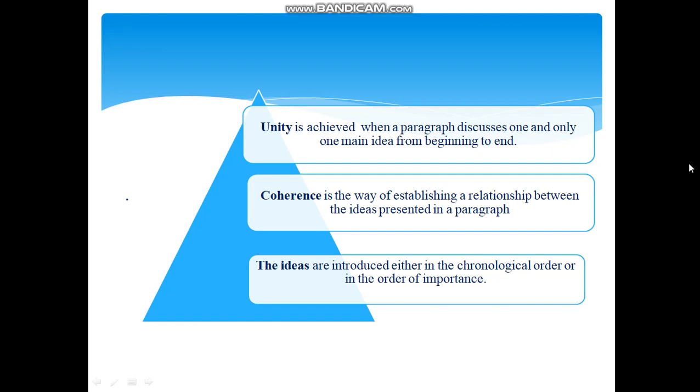What is coherence in a paragraph? Coherence means establishing a relationship between the ideas presented in a paragraph. It brings about a rationale in the arrangement of the ideas, which are introduced either in chronological order or in the order of importance. Besides, transitions that compare, contrast, illustrate, add, or show cause and effect build logical bridges. The ideas thus expressed in the paragraph flow smoothly from one to another in a logical sequence. This helps the reader to understand the paragraph.